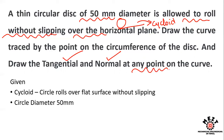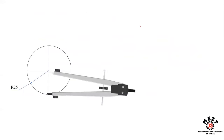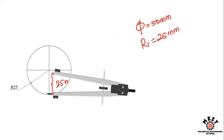First, draw the circle. The diameter is 50mm, so the radius is 25mm. Take 25mm in your compass and draw a circle. To simplify the diagram, we divide the circle into equal parts — we can divide it into 12 or 8 equal parts.